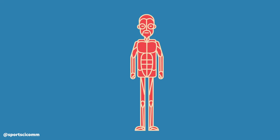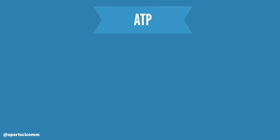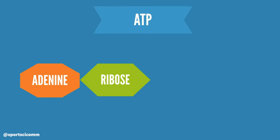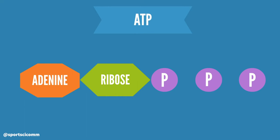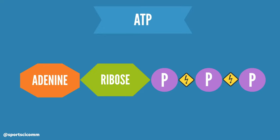In the human body, energy is transferred through a compound called ATP. ATP consists of a molecule of adenine and ribose linked to three phosphates. The energy in ATP is stored in the bonds that link the two outermost phosphates.